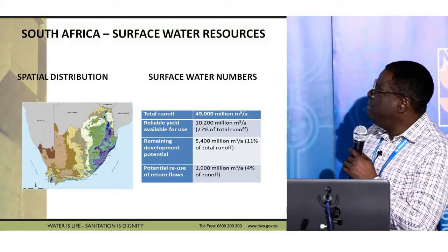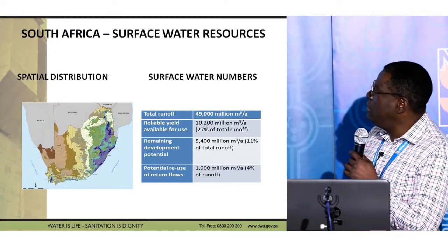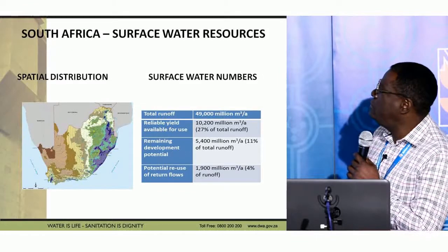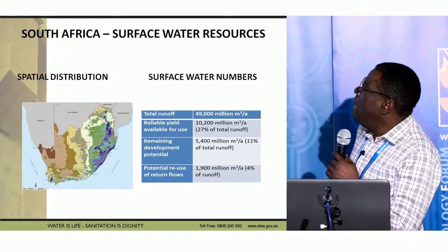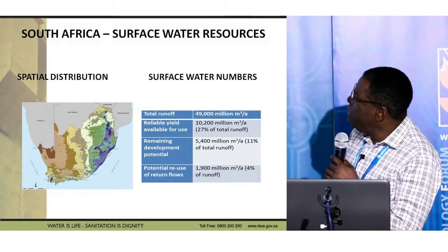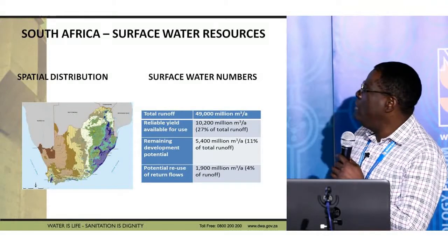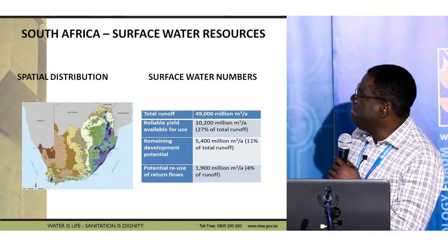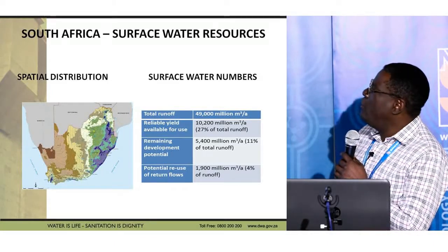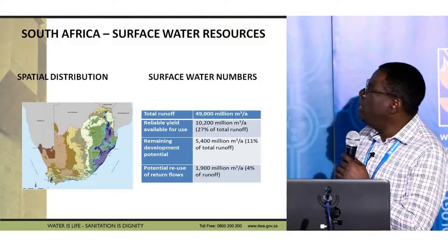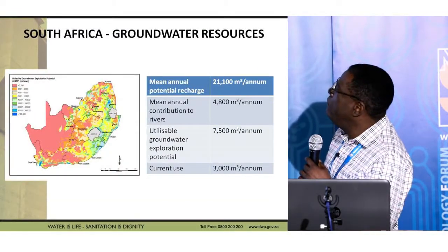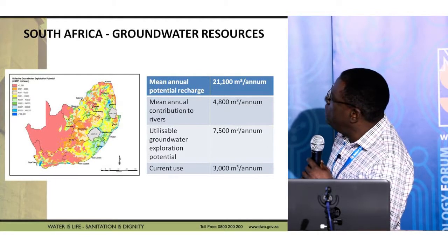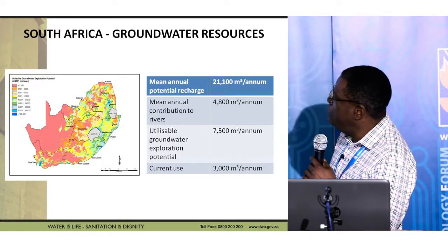From the work that Bill Pickman and others did over many years since the 1950s, we are looking at about 49 billion cubic meters in annual runoff, and the reliable yield is about 27% of that. Potential remaining development is about 5.4 billion, and there is some reuse we are looking at. We are going to be launching a study to confirm some of these numbers. This is for surface water, but you can apply the same argument to groundwater. There is a gap of potentially about 4 billion additional cubic meters we could access.